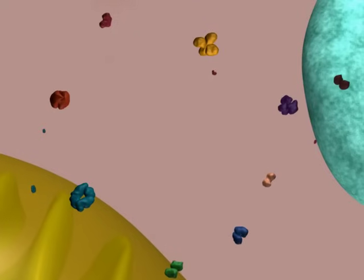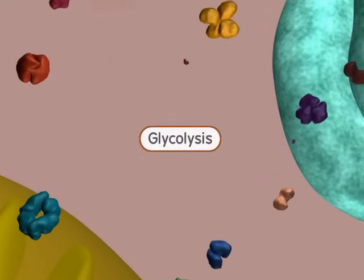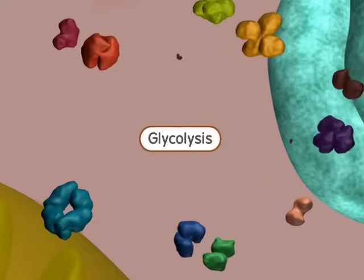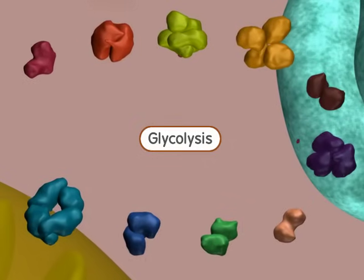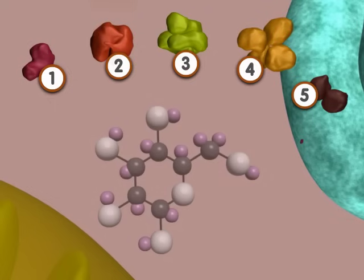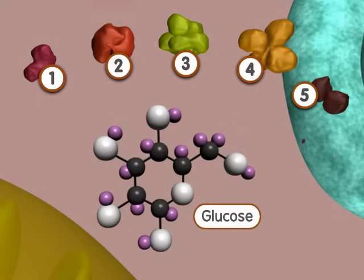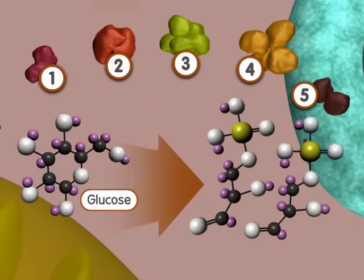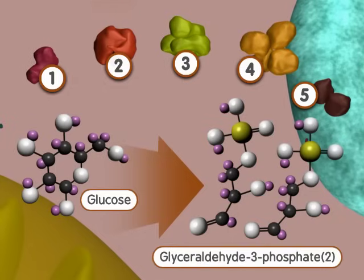Let's take a look at an overview of the key steps of glycolysis and focus on the input and output molecules. The first five steps of glycolysis convert a six-carbon sugar, glucose, into two three-carbon sugars, glyceraldehyde-3-phosphate.